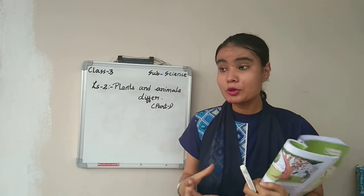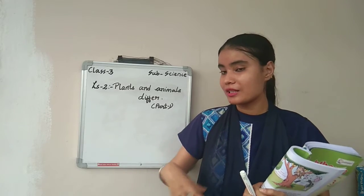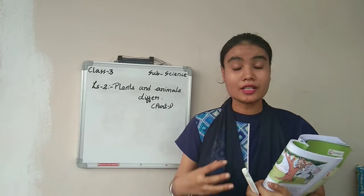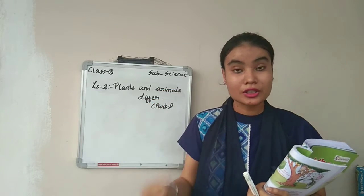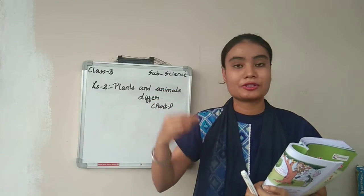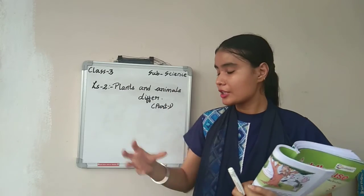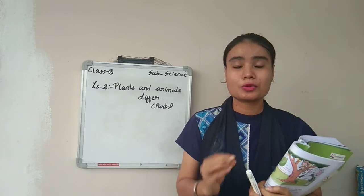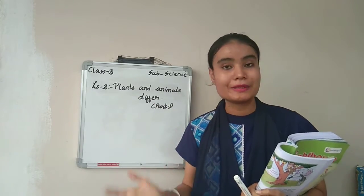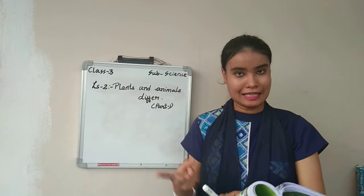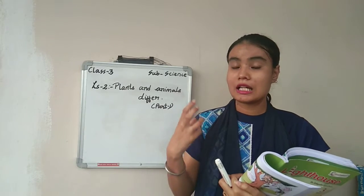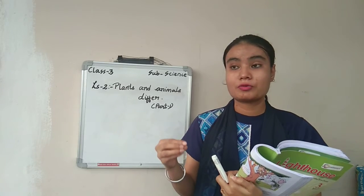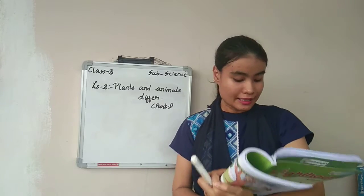Why do animals move? They move in search of food. By sitting in one place, animals cannot get food. So in search of food, they need to move from one place to another. In search of shelter also, they need to move. They cannot just sit in one place their whole life. So for shelter as well as for food, they need to move from one place to another. Plants cannot move because their roots are attached to the ground, and animals need to move in search of food as well as shelter.